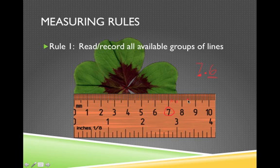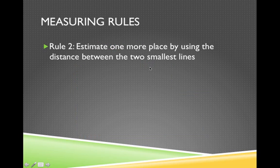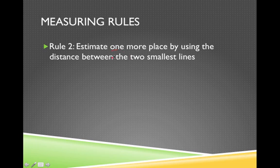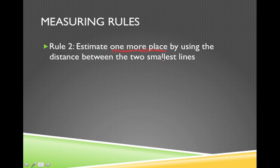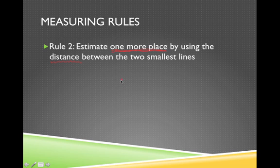Now, notice I called that rule number one — this is as far as we can go in terms of the measuring device lines themselves. But rule number one implies there's going to be a rule number two. Rule number two says you have to estimate one more place, and this is where people tend to drop the ball. You want to estimate one more place after you've run out of your little lines. A ruler can measure down to the tenths place, which means you want to estimate down to the hundredths.